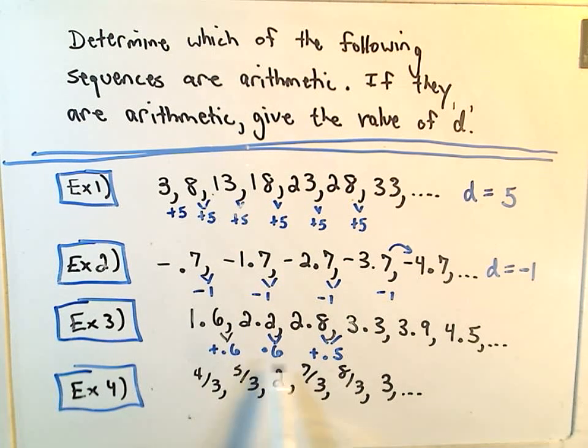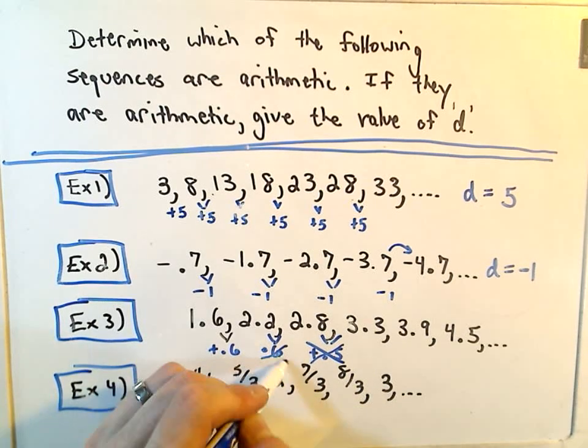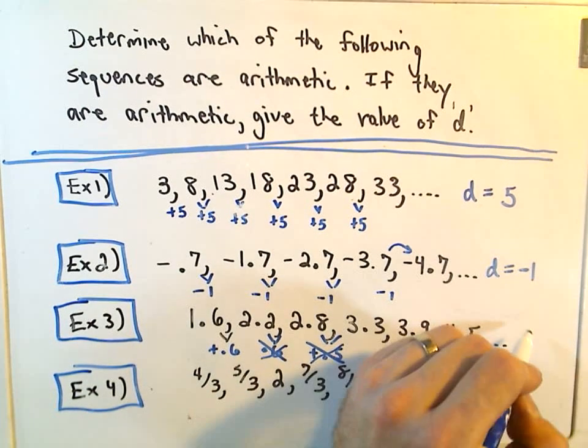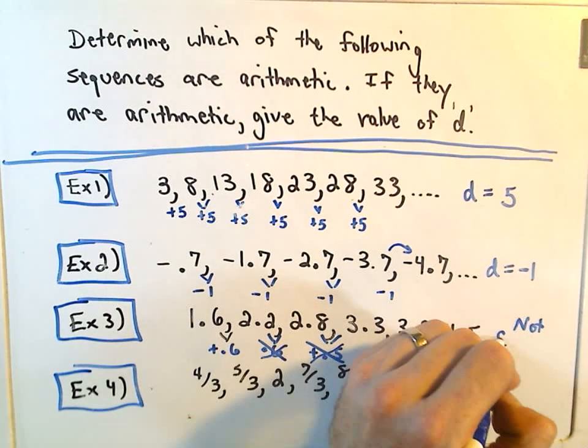And once you find two numbers that are different, it doesn't matter what happens from then on out. Since they're not differing by the same amount, we say it's not arithmetic.